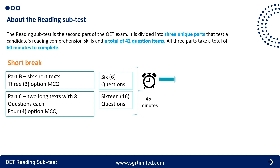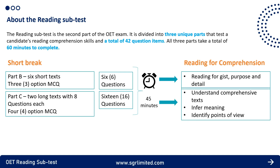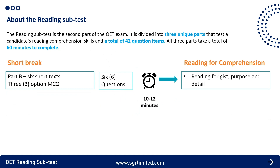Part B will test your ability to understand different question types such as gist, purpose, and detail. Part C will test more of your comprehension skills — how to understand long texts, how to infer meaning, and how to identify different points of view. As Part B is shorter, we recommend completing it within 10 to 12 minutes to give you more time to tackle the longer texts in Part C.